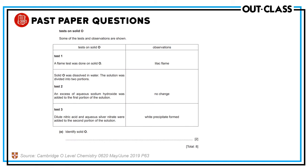Nothing was told about solid O, but tests and observations were given. We have to guess what it is. A flame test was done on solid O. Metal ions have different flame colors. A lilac flame indicates potassium ion — potassium ion is present.